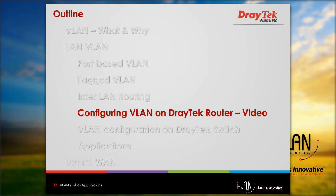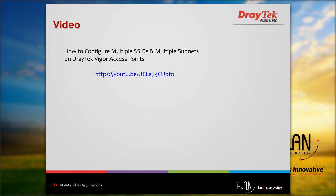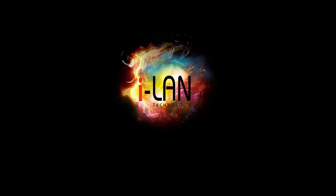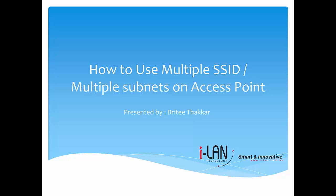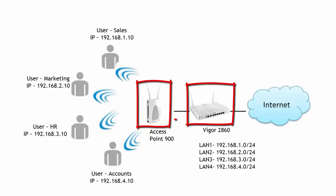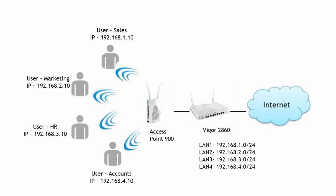Now let's watch the video for the VLAN configuration on DrayTek access point and router. This video demonstrates how to set up your access point with Multi-SSID. We can set up Multi-SSID to separate wireless clients to different subnets. In this example, the AP connecting to a router has multiple subnets and is passing traffic via trunk port. We will configure the AP900 and Vigor2860 one by one. Let's configure Vigor2860 first.